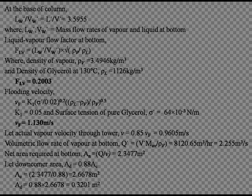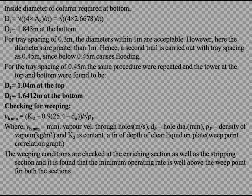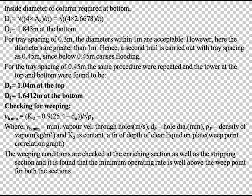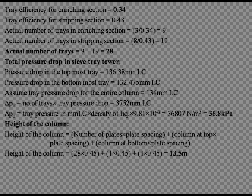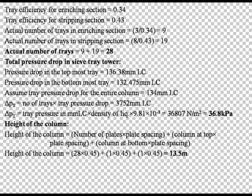The flooding velocity at the bottom was calculated as 1.13 m per second. Since for a tray spacing of 0.3 m the diameters were not within the acceptable range of 1 m, the trial was carried out again with a tray spacing of 0.45 m and the diameter at the top and bottom were recalculated. The pressure drops for the tray in the enriching and stripping sections were calculated. Tray efficiency was calculated using the Van Winkle correlation. The actual number of trays was calculated to be 28, and the total pressure drop in the sieve tray column was 36.8 kPa.